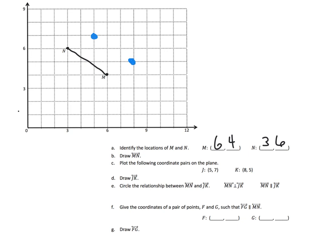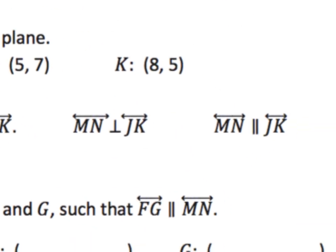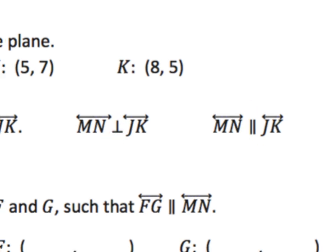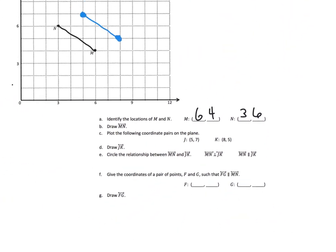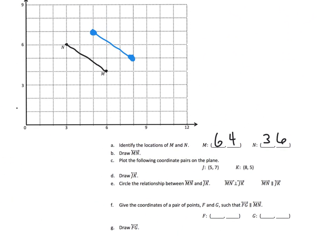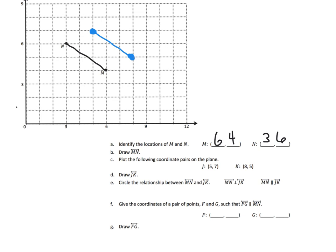Then connect the dots. Now, are these two lines perpendicular — the upside-down T symbol — or are they parallel? We can see that our two lines are definitely parallel, so we circle the parallel symbol.